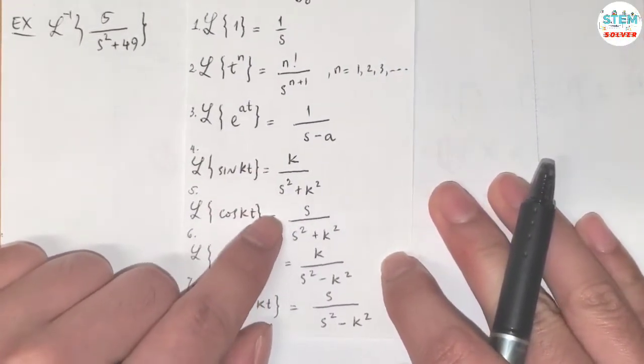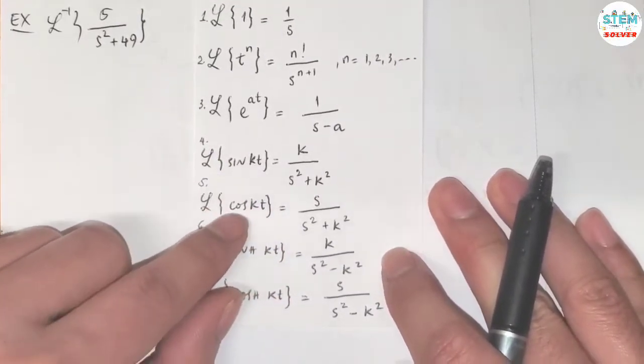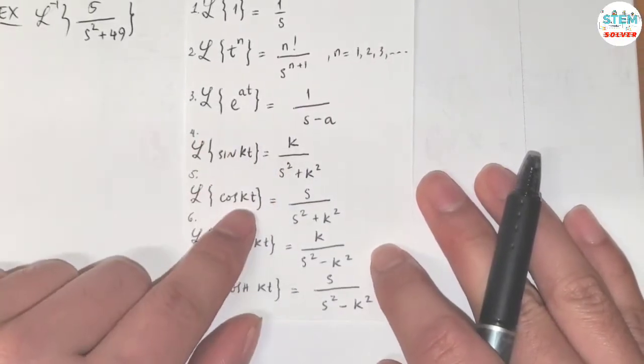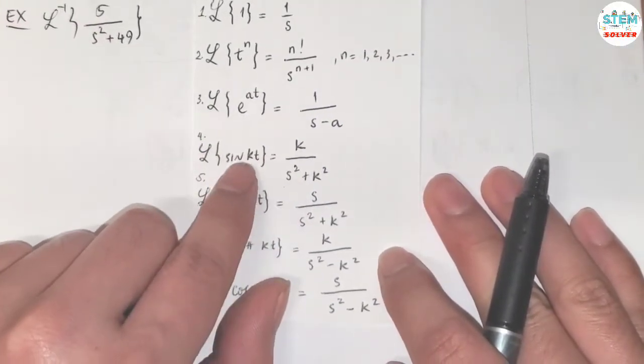So it should be either sine or cosine. And for sine, we only need a number. But for cosine, we need to have an S. But we don't have S here, so it should be sine KT.